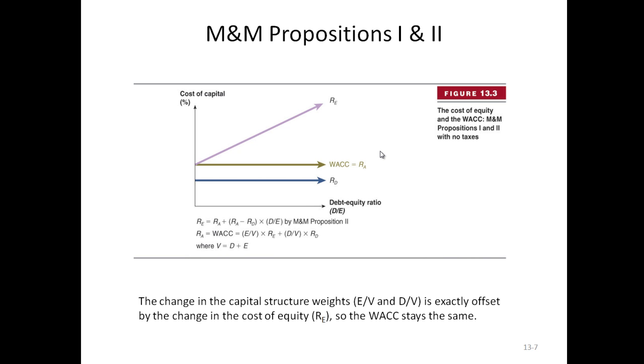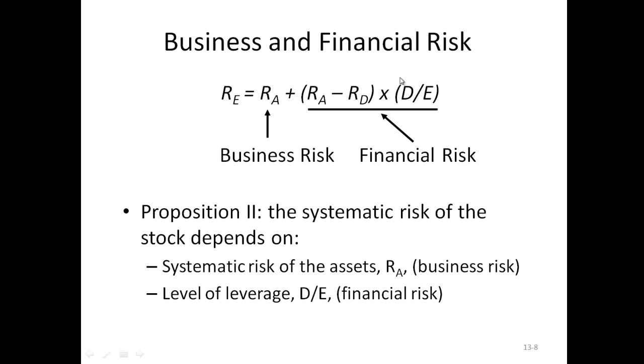Here's a graph that actually comes from the Ross Westerfield Jordan textbook. And what it shows you is down here we have the return to debt. It's a horizontal line because the return to debt doesn't change. Here we have a line that slopes upward. And this is the return to equity. And the reason it slopes upward is that as we use more debt, we increase the risk that shareholders face and therefore they require a higher rate of return. But notice that the weighted average cost of capital stays the same even when we're using more debt.